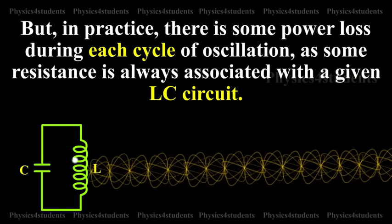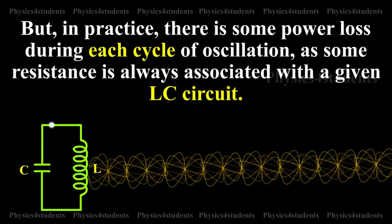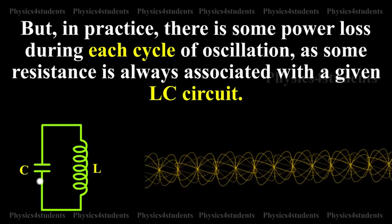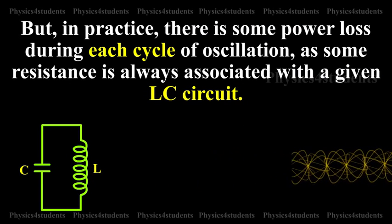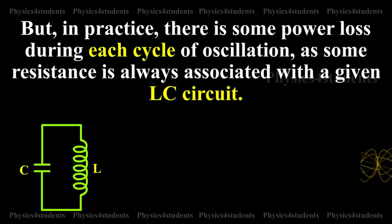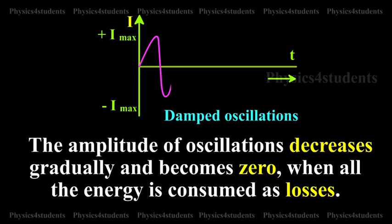But in practice, there is some power loss during each cycle of oscillation as some resistance is always associated with the given LC circuit. Hence, the amplitude of oscillation decreases gradually and becomes zero when all the energy is consumed as losses.